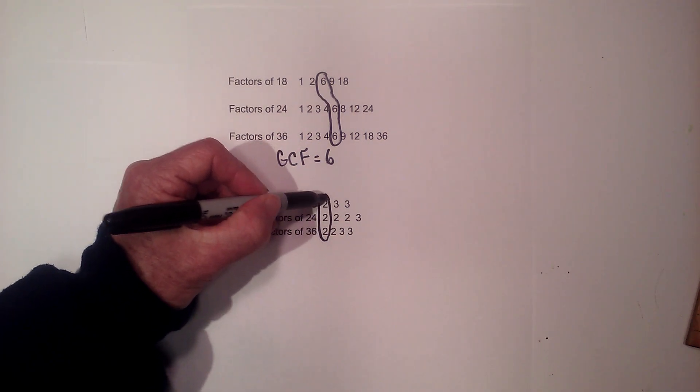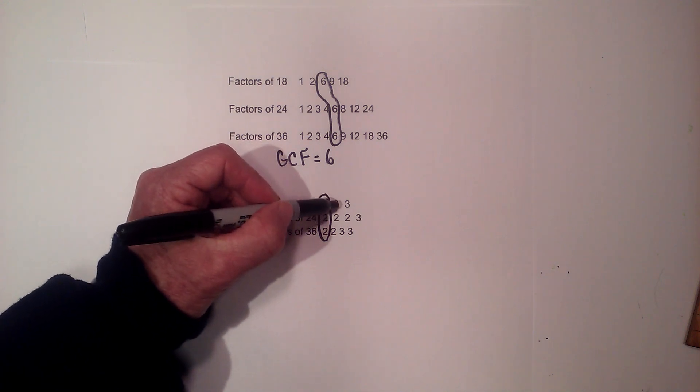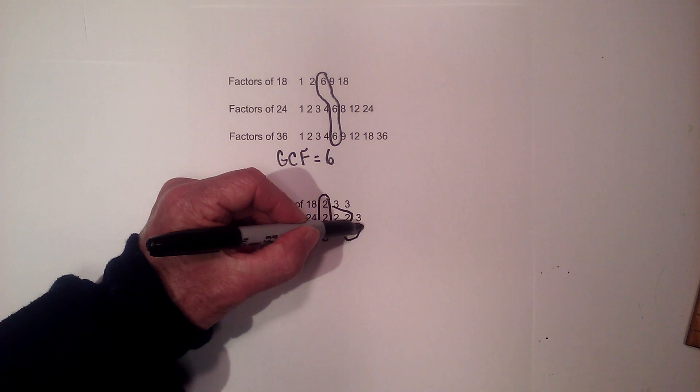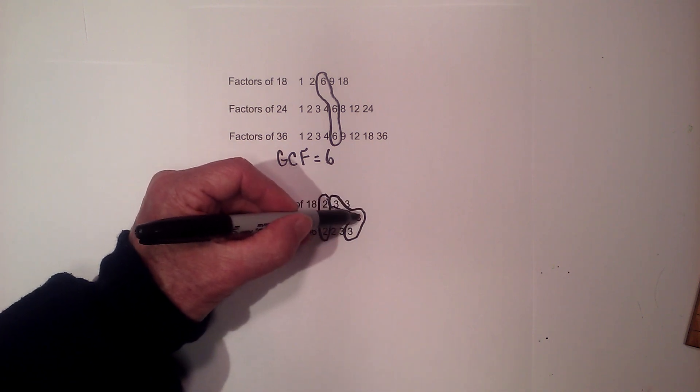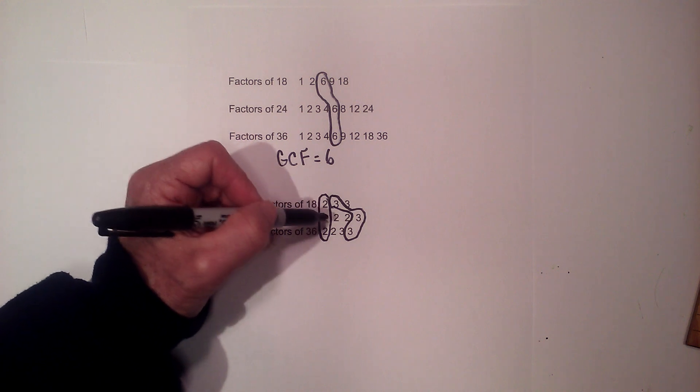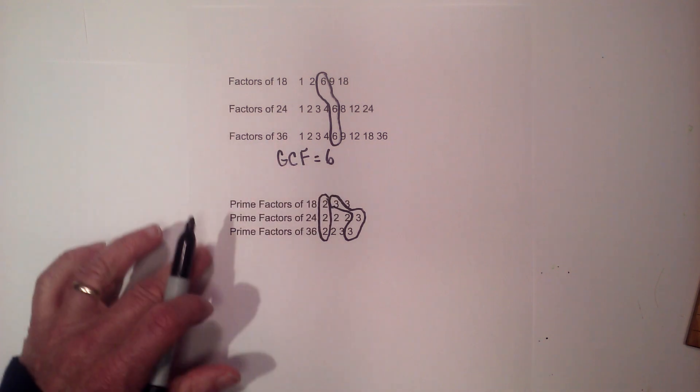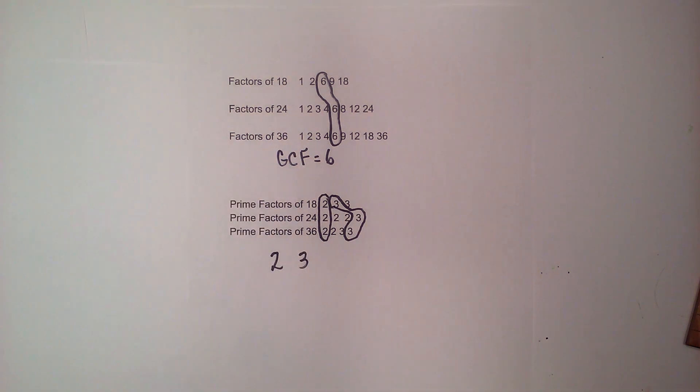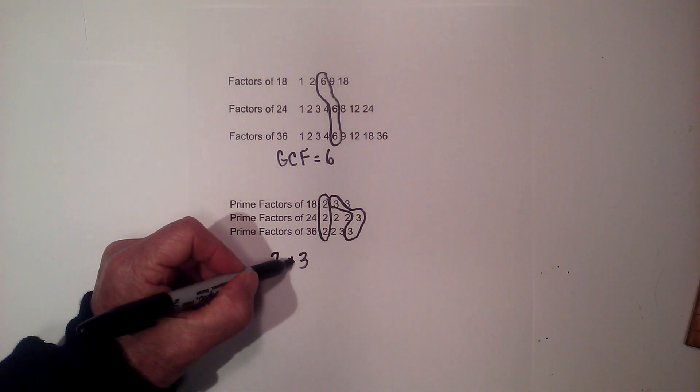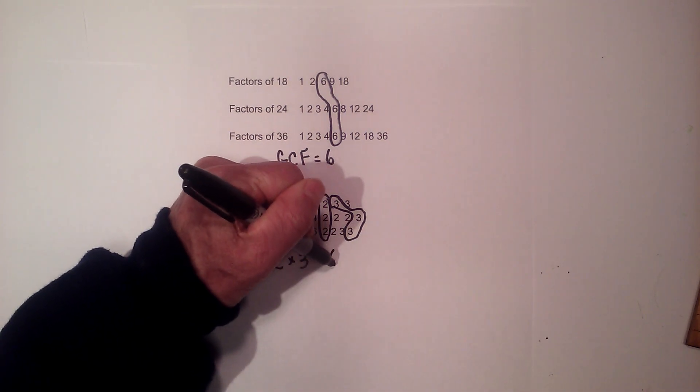So I see 2 is common on all three lists and it looks like 3 is common on all three lists. There's a 3 here but I've already used this 3, and there's a 2 but not here. So 2 and 3 are common prime numbers for each of these three numbers so I multiply these together and that equals 6.